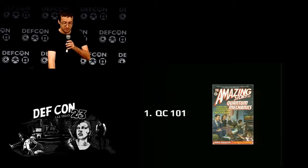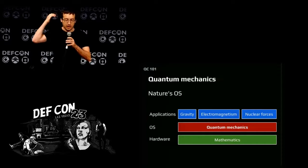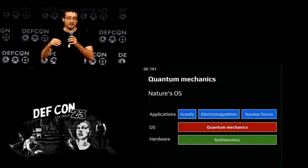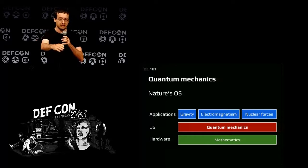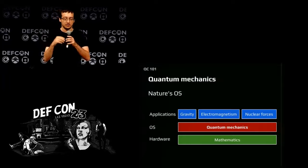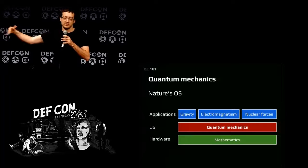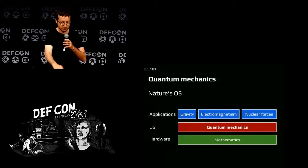So quantum computing is based on quantum mechanics. You can see quantum mechanics as the operating system of nature — it's like the framework on top of which theories like gravity, electromagnetism, and nuclear forces are running. You take the theories of nature and try to adapt them to the quantum mechanics operating system. This is all relying on some mathematical notions.